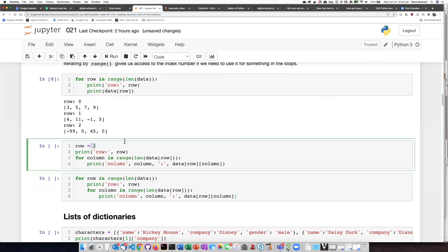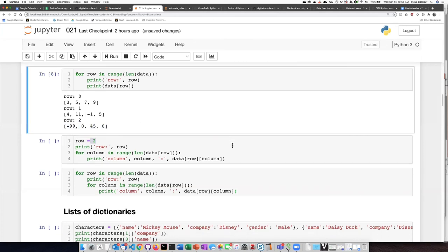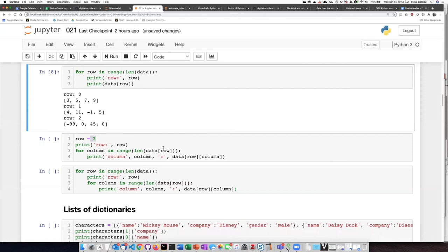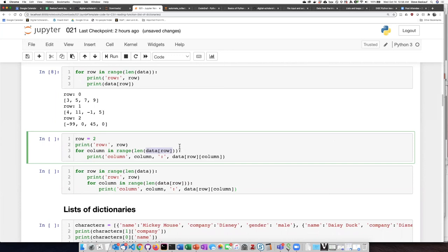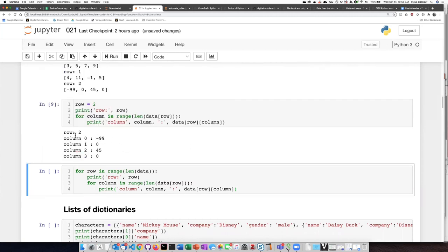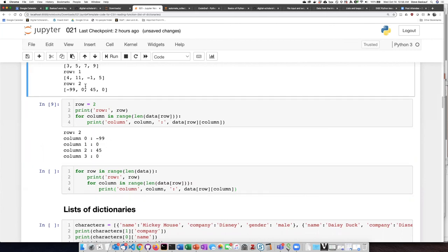If I set the row to be row two, which would be this one right here, then I can step through each of the items from zero to the end of row two. That'll be items zero, one, two, and three. And I'm going to have it print what column I'm talking about. So row two, column zero is negative 99. Then column one is zero. Column two is 45. Column three is zero, just as I see here.